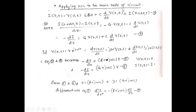Applying KCL to the main node of the circuit, current entering equals the sum of currents leaving. Therefore I(Z,T) = V(Z,T)·G·ΔZ + C·dV/dt·ΔZ + I(Z+ΔZ, T). Rearranging and applying ΔZ → 0, we get: −dI/dZ = G·V(Z,T) + C·dV/dt·V(Z,T). This is equation number 4.